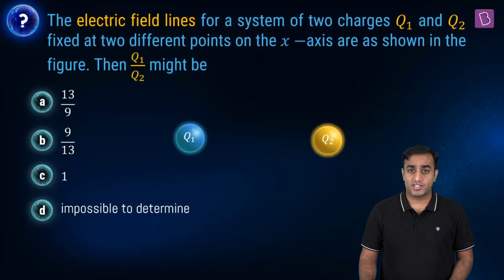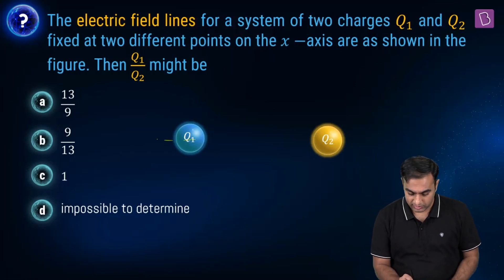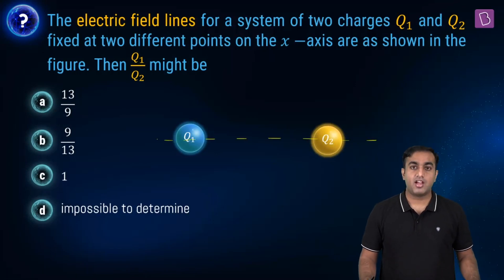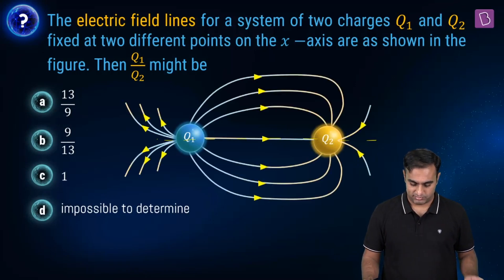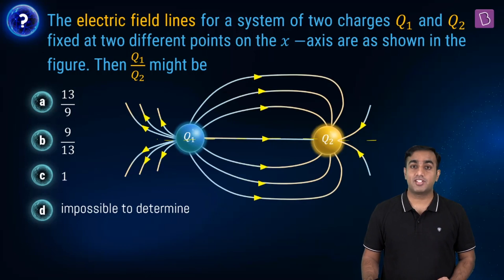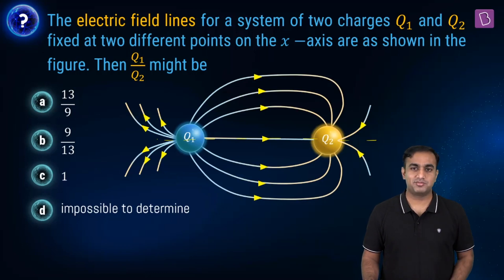We are given two fixed charges Q1 and Q2 lying on the X-axis, along with the electric field line structure surrounding these charges. With this information, we are supposed to find the ratio of the magnitude of the charges Q1 by Q2.